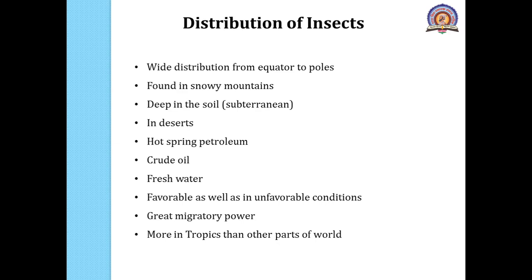Insects have great migratory powers and, whether actively or passively migrating, they are distributed all over the world. Insects are found more in tropical countries or tropical regions than in other areas of the world, probably because of the amount of sunshine and consequent good vegetation, which is a constant feature of the tropical region. Distribution is brought about by migration, and in many cases air currents are responsible, or man himself — with his expansion of trade the world over — has spread both beneficial and harmful insects from one place to another.